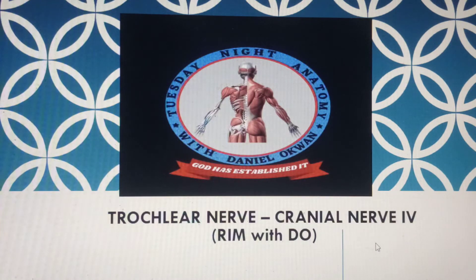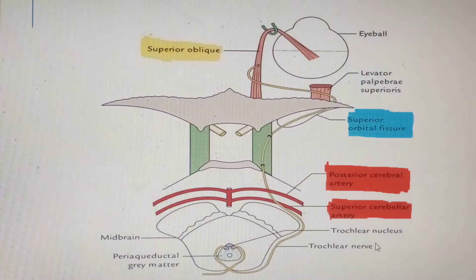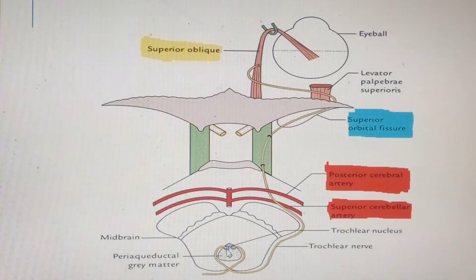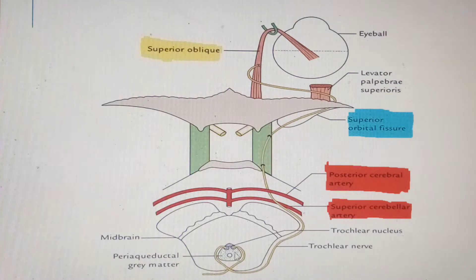Here we can see the midbrain of the brainstem. Just like the third nerve, the trochlear nerve also has its nucleus — the trochlear nucleus — which, similar to the third nerve nucleus, is located deep in the periaqueductal gray matter.